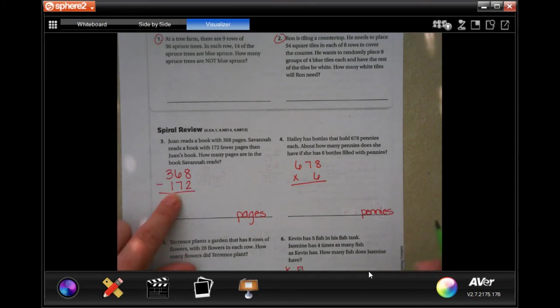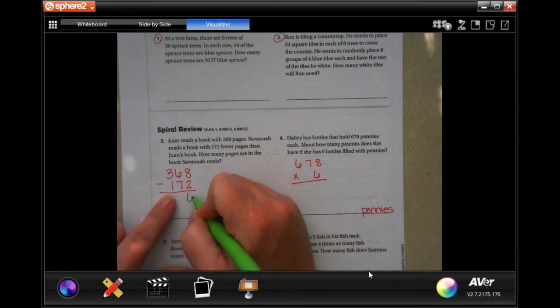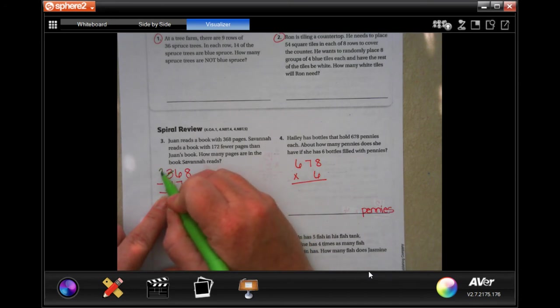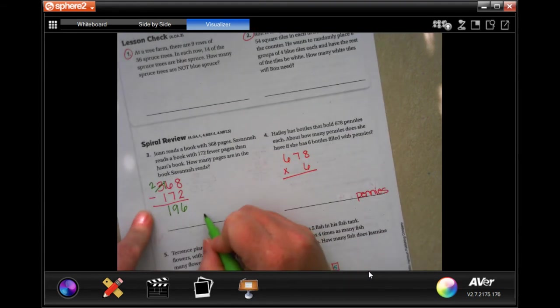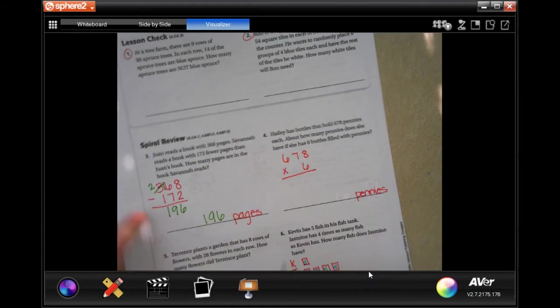So let's subtract. Eight minus two is six. Six cannot take away seven, so I'm going to borrow one, making that 16. 16 take away seven is nine. And two take away one is one. 196 pages.